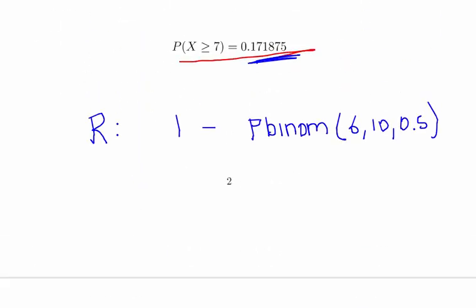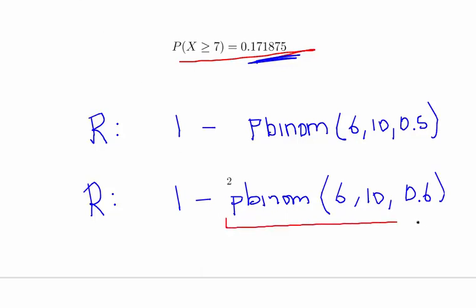Just again, what you could do here if you want to check that using R, I'll just write it out here: 1 minus pbinom 6, 10 and 0.6. Correctly what this does is calculates the probability of X less than or equal to 6. Now there are actually additional arguments you can make to find it directly without looking at the complement.